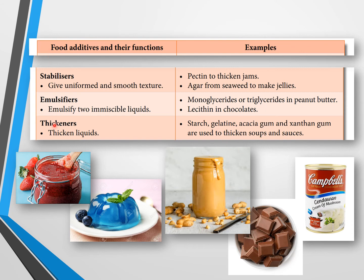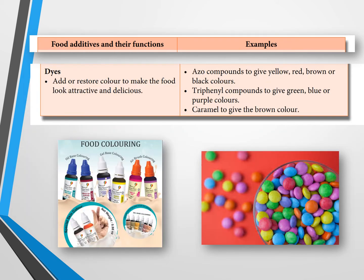The sixth type is thickeners. Thickeners are used to thicken liquids. Starch, gelatin, acacia gum, and xanthan gum are used to thicken soups and sauces — for example, in Campbell's soup. The seventh and last type is dyes, which are added to restore color and make food look attractive and delicious.